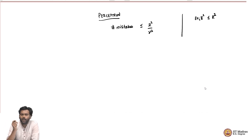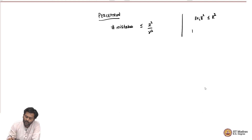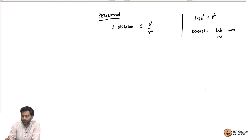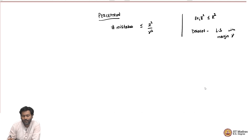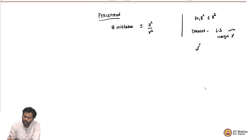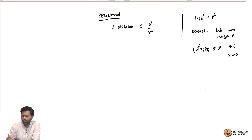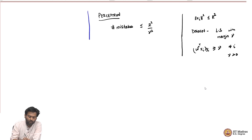More importantly, γ is the assumption we made about the data set: that the data set is linearly separable with margin γ. What does that mean? It means there exists some w*, such that w*ᵀ xᵢ yᵢ ≥ γ for all data points i, where γ is some value greater than 0.